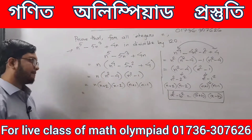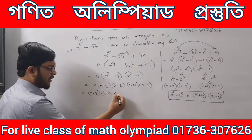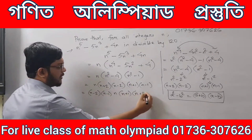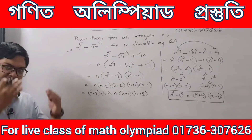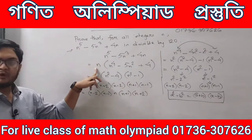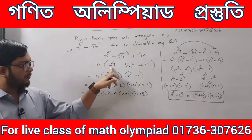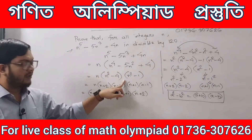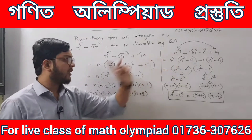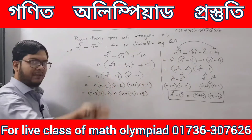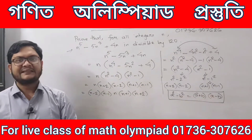The next step is to rearrange. We rearrange the factors as: n minus 2, then n minus 1, then n, then n plus 1, then n plus 2. First step: factor out n. Then resolve into factors using middle term. Then apply a square minus b square.